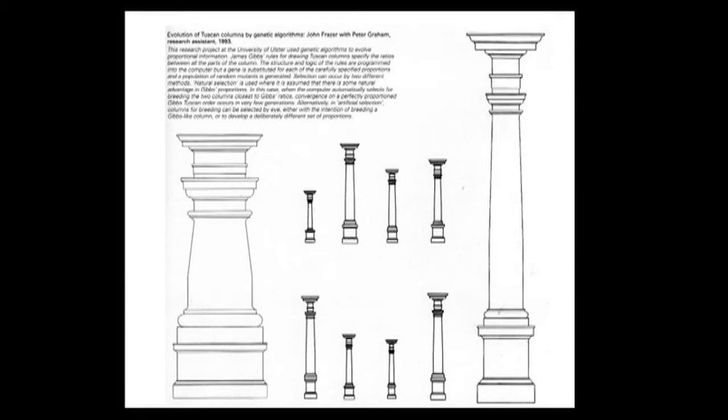This is a totally pointless exercise — all we were trying to do is prove it could be done. Also, you can choose to pick ones that don't look like James Gibbs. You can pick ones that look shorter and fatter if you have a predilection for that. This is applying it to yacht design — done in AutoCAD with a cute little program called AutoYacht for calculations.